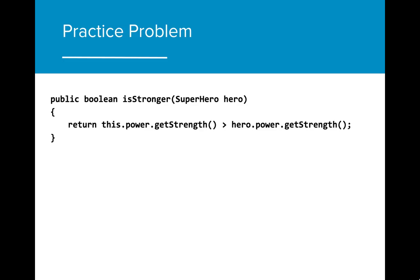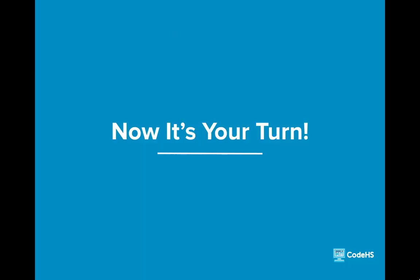We can shorten this program to one line by comparing the calls to strength directly as opposed to storing the strength values in individual variables. Now that you've learned about the this keyword, let's get some practice using it in the CodeHS editor. We'll see you later.